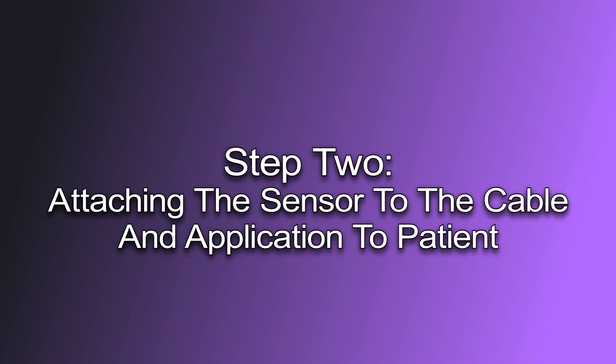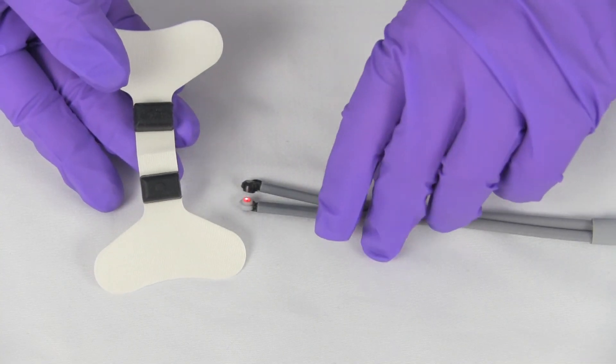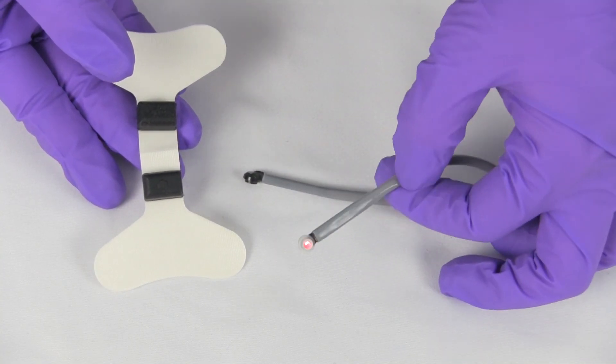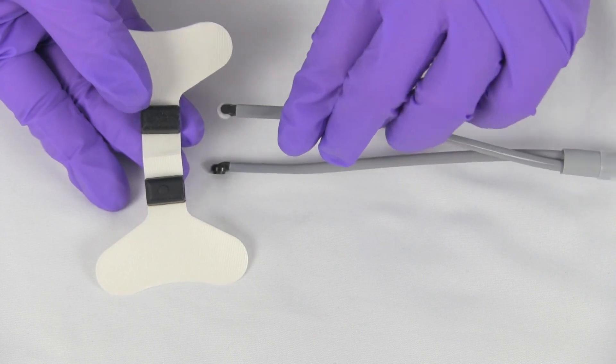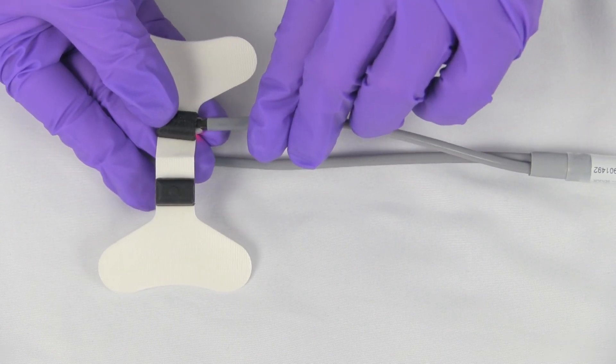Step 2: Attaching the sensor to the cable and application to the patient. To attach the grips to Iratomed's SpO2 OPOD, gently grip the fiber optic cable emitting the red light and insert into the opening on the selected grip marked by a star icon or number.